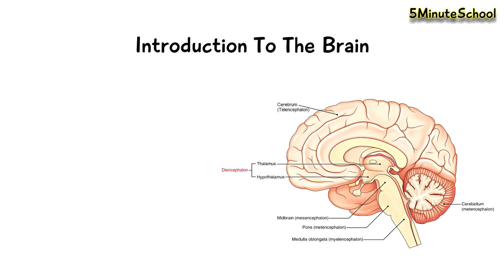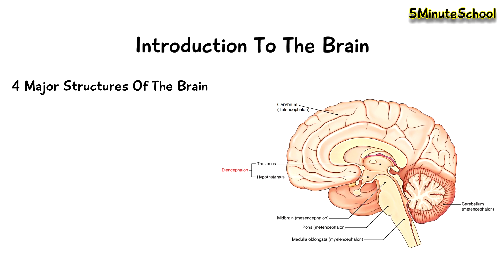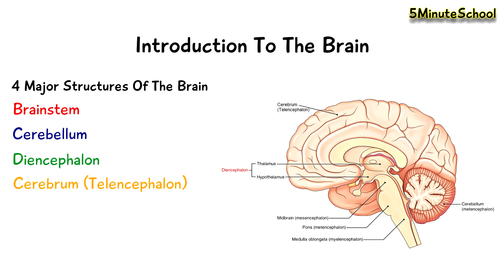A lot of people assume when talking about the brain that it's just this region here, which is called the cerebrum. But there are actually four major parts to the brain. In this video I just want you to understand what the components are and some of their basic functions. We have the brain stem, the cerebellum, the diencephalon, and the cerebrum.